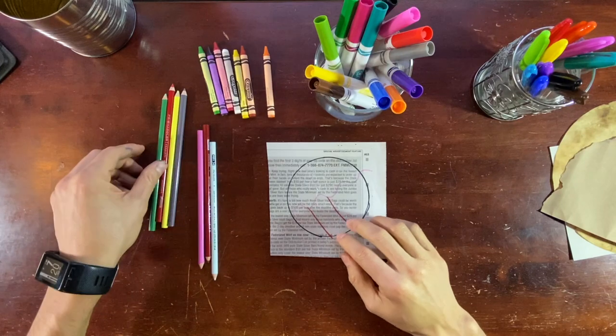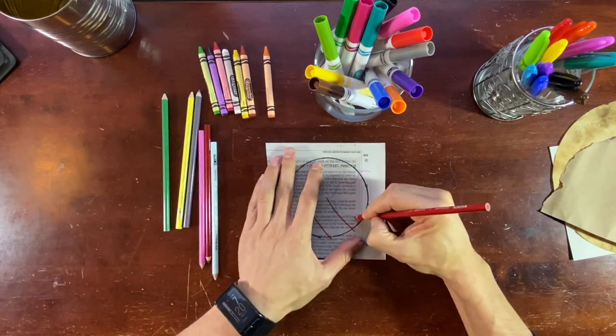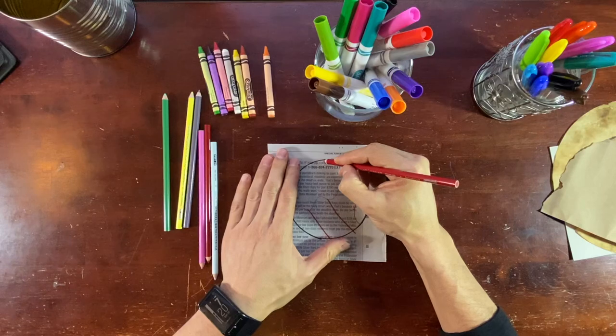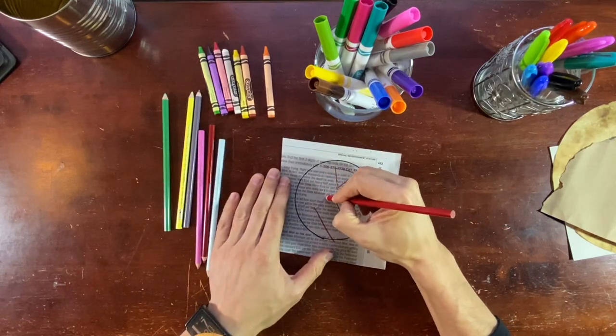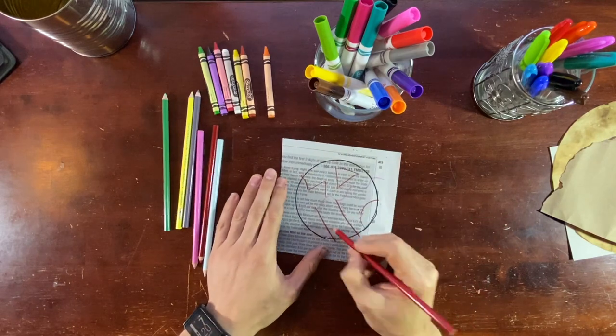Now we can try adding some shapes. I'm gonna add some half circle here. Maybe a triangle up here. Maybe another line right here. Divide the space.